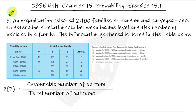Next subdivision: earning Rs. 13,000 to Rs. 16,000 per month and owning more than 2 vehicles. Looking at the row for 13,000 to 16,000 and the above-2-vehicles column, we have 25 families. The total number of outcomes is 2400, so the probability is 25 divided by 2400.